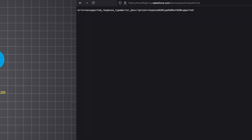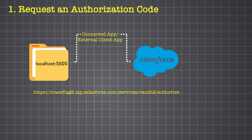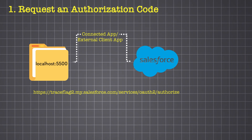That's because Salesforce needs to verify the identity and intent of the application making the request. To establish a valid connection, we use a connected app or an external client app, which acts as a secure bridge between the external application and Salesforce. It registers the app's details, enforces org policies, and validates every request.